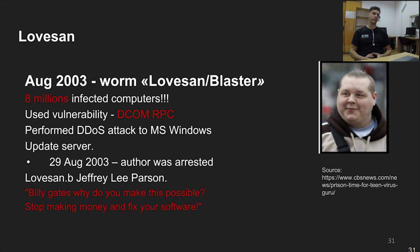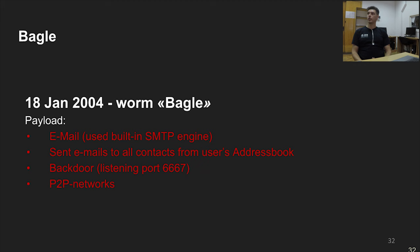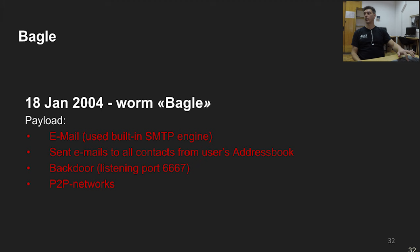In 2004, the Bagel worm used its own SMTP client to send emails propagating itself, taking contacts from the Windows address book. Once installed, it started listening on ports 6667, providing backdoor capabilities so the attacker could connect and perform further operations. Peer-to-peer networks like torrents were also used to spread it, as file sharing via such networks was very popular at the time.